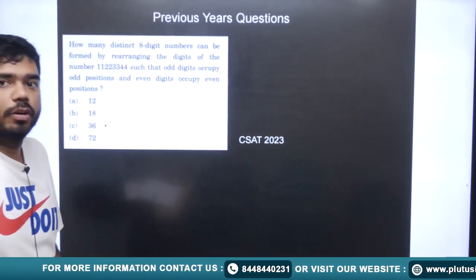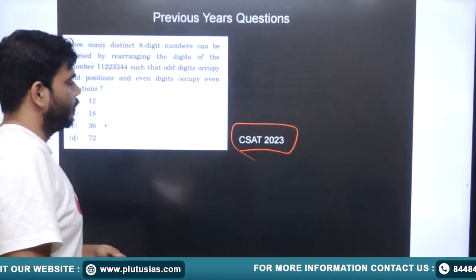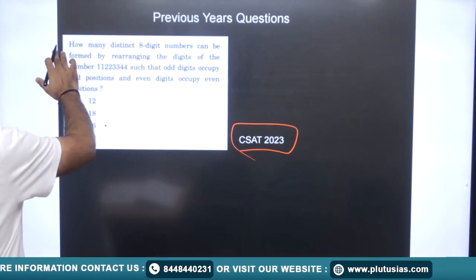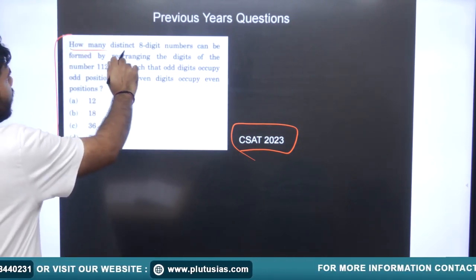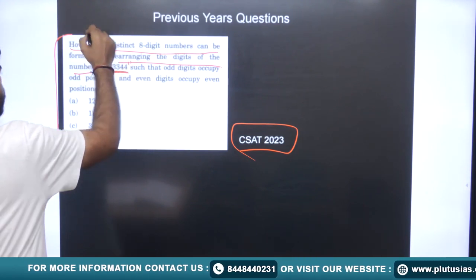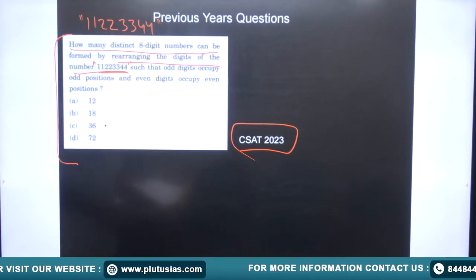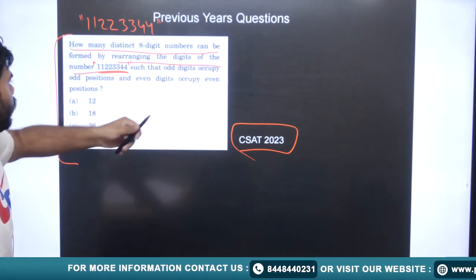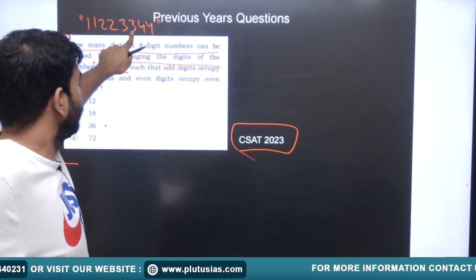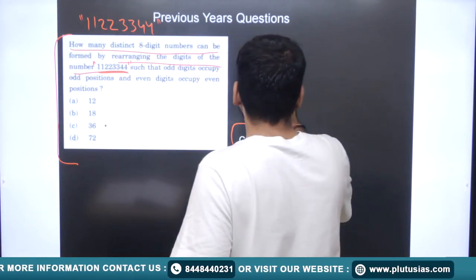Now we'll solve previous year questions. The first is from CSAT 2023: how many distinct eight-digit numbers can be formed by rearranging the digits of 11223344, such that odd digits occupy odd positions and even digits occupy even positions? We have repetition of digits and two conditions — a mixture of both.